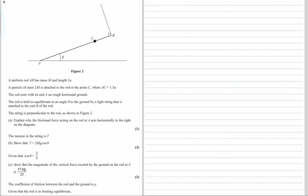A uniform rod AB has mass m and length 2a. A particle of mass 2m is attached to the rod at C, where AC is 1.5a. The rod rests with its end A on a rough horizontal ground, so there's friction. It's held in equilibrium at angle theta by a light string attached to the end at B. The string is perpendicular to the rod.